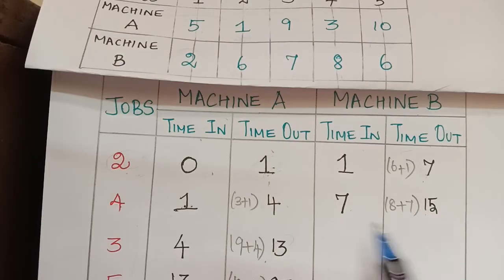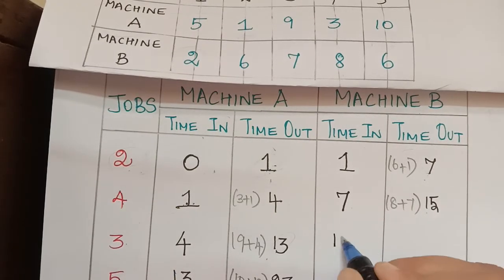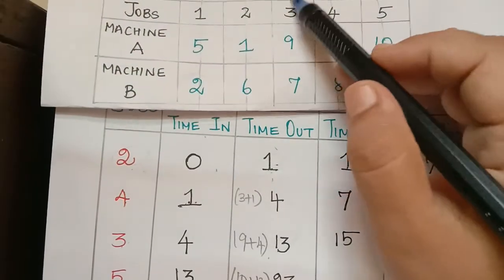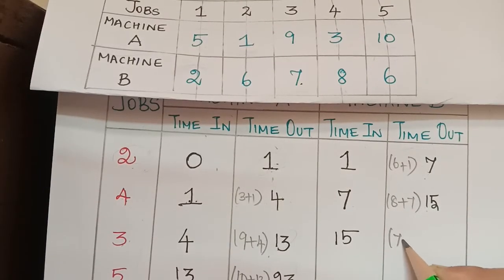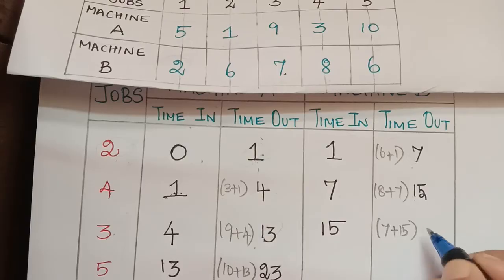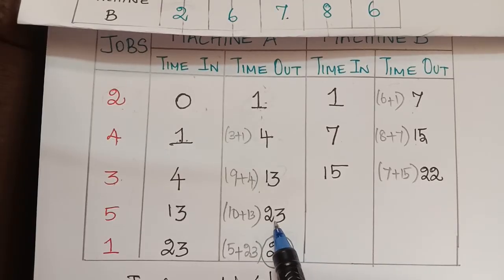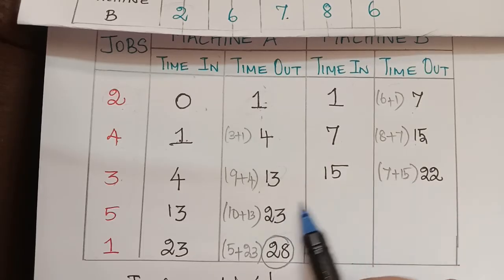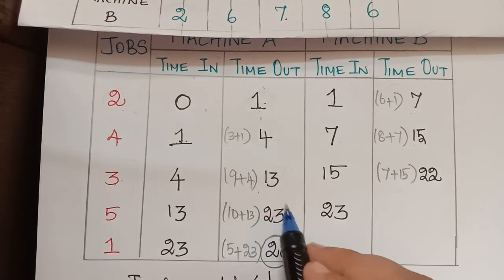We check whether 15 or 13 is greater — 15 is greater, so the time in for job 3 in machine B is 15. Job 3 takes 7 hours in machine B, so 7 plus 15 equals 22. Then we check whether 23 (machine A time out for job 5) or 22 is highest — 23 is the maximum, so we write 23 as time in for job 5, not 22.